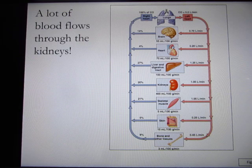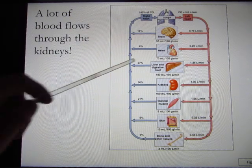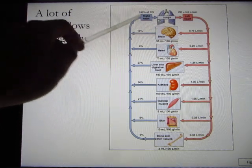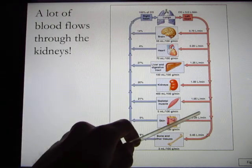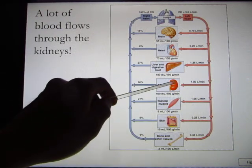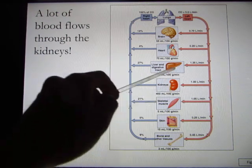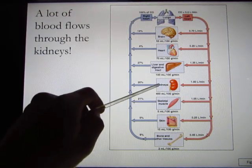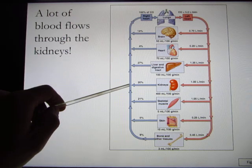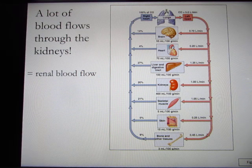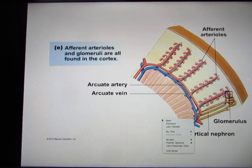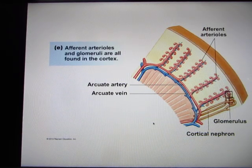These slides show your blood circulation from your heart. About 20% of your blood goes to your kidney — so constantly, every second, 20% of your blood is being filtered. The blood flow to your kidney is called the renal flow.